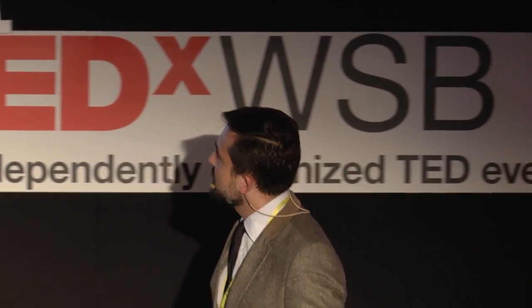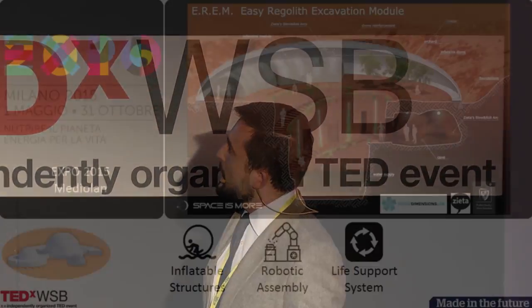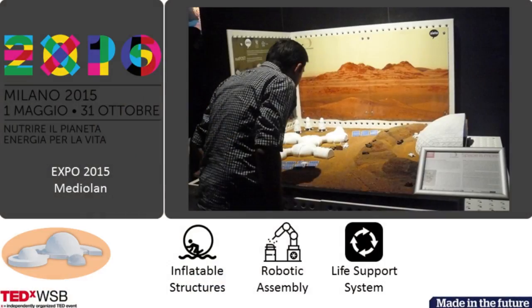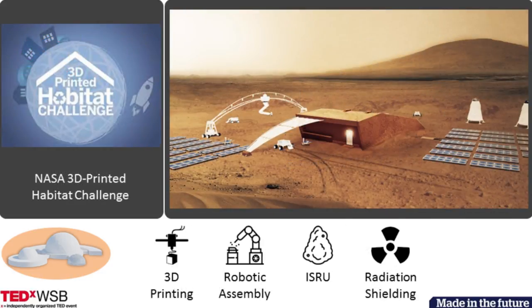But it worked out in the end, since I was invited by the Ministry of Economy to show our next idea during Expo 2015 in Milan. I created a concept of an inflatable Martian colony together with our partners, involving inflatable structures, robotic assembly, and a life support system. I learned something out of it and was quite proud. So we decided to do another competition — this time NASA's 3D Printing Habitat Challenge.